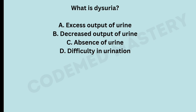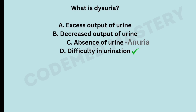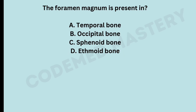What is dysuria? Option A: excess output of urine. Option B: decreased output of urine. Option C: absence of urine. Option D: difficulty in urination. The right answer is option D, difficulty in urination. The prefix 'dys-' means bad, difficult, abnormal, or impaired, therefore dysuria means difficulty in urination. The medical term for excess output of urine is polyuria, for decreased output is oliguria, and for absence of urine is anuria.